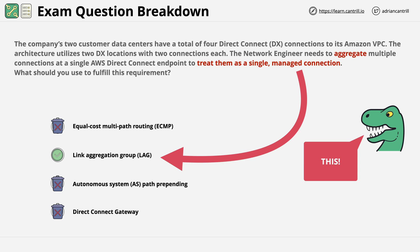Learn to recognize this type of question. If the answers are short — only a few words — then make sure before doing anything else that you understand what each of them is or does. Then, with that knowledge fresh in your mind, read the question. You'll often find it's a very quick process to evaluate the question and pick the correct answer if all of the features that each answer relates to is fresh in your mind.